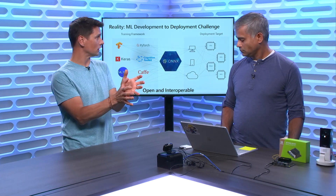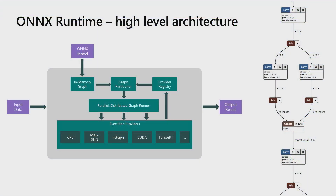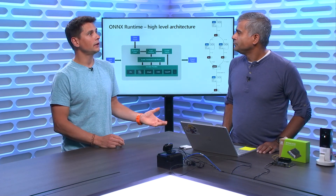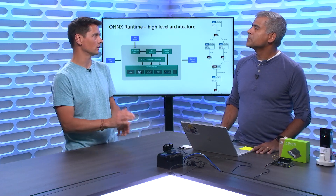You produce an ONNX format model from anywhere — your favorite tool or an existing one — and with the ONNX Runtime you are able to run that model anywhere. The ONNX Runtime is open source and has a plug-in architecture whereby it interfaces with different types of hardware libraries that NVIDIA, Intel, or others build. This plug-in architecture enables it to take advantage of the underlying hardware and accelerate the model as specified by that hardware. An app developer writes their code only to ONNX Runtime's APIs, and ONNX Runtime is able to optimize it for the target it's going to be deployed on — whether that's a GPU, NPU, FPGA, or something else.